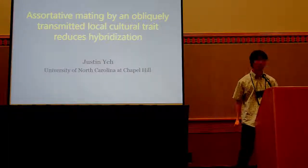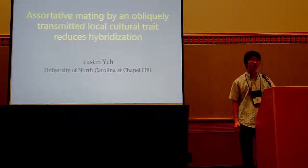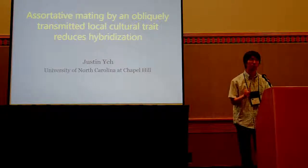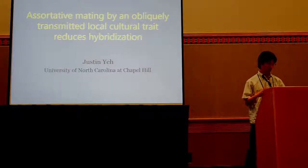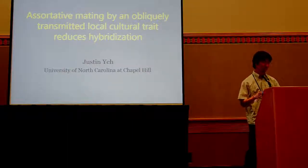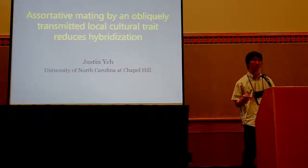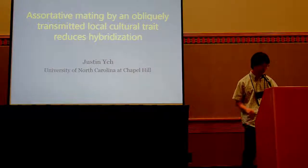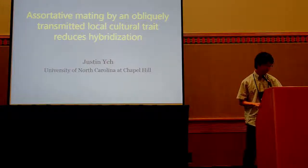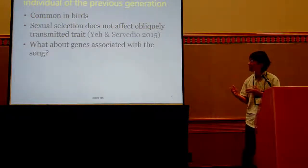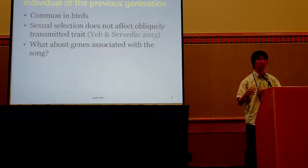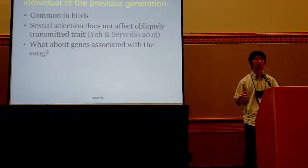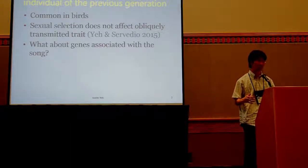Hello, my name is Justin. I'm a graduate student at UNC Chapel Hill in Maria's videos lab. I'm here to talk about how assortative mating by an oblique-transmitted cultural trait can potentially reduce hybridization and increase genetic divergence. This model is mainly motivated by the question of whether learned bird song can contribute to speciation.